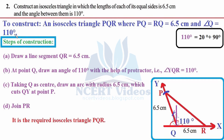You can use a protractor, but it is very useful to learn construction with compasses only. Steps of construction: first, draw line segment QR of 6.5 cm — we chose QR because we will construct the angle at Q. Using a ruler, draw a line segment from Q to R of 6.5 cm. At point Q, draw an angle of 110 degrees — angle YQR equals 110 degrees — using a protractor or compasses.